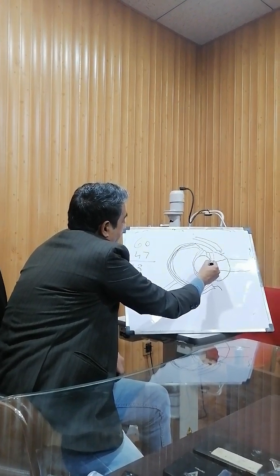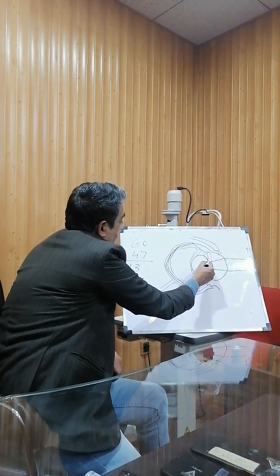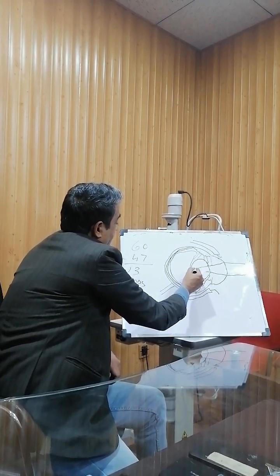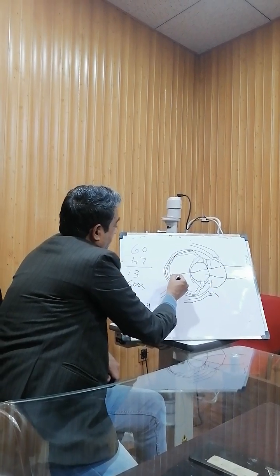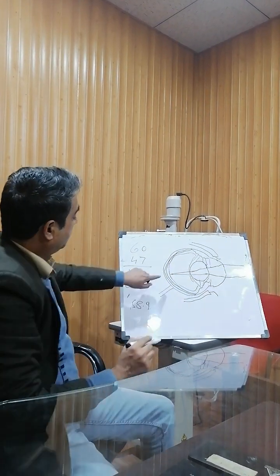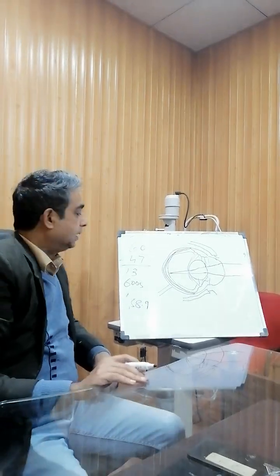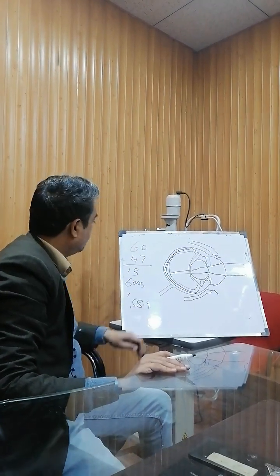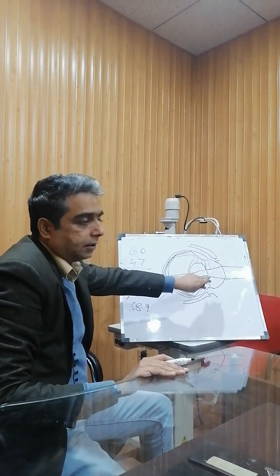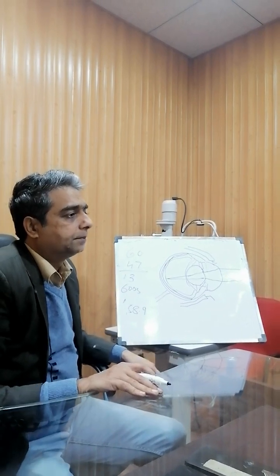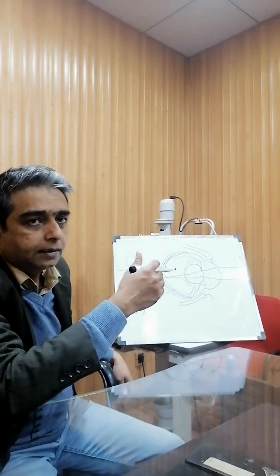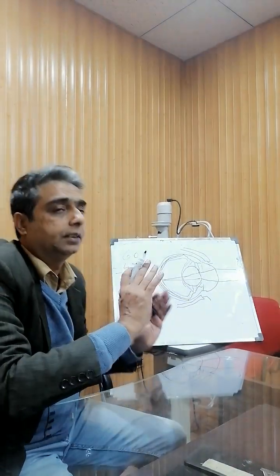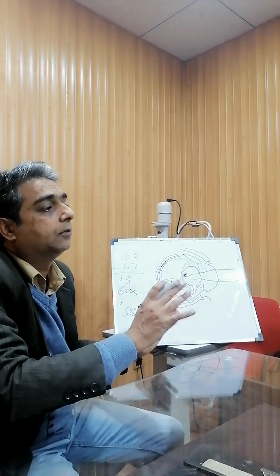The remaining factor is from the lens — 60 minus 47 equals 13. Therefore the image is formed right on the macula. About 13 to 15 diopters of further refraction is done by the lens, making a total of 60 diopters. This is the basic function and functionality of the eye.